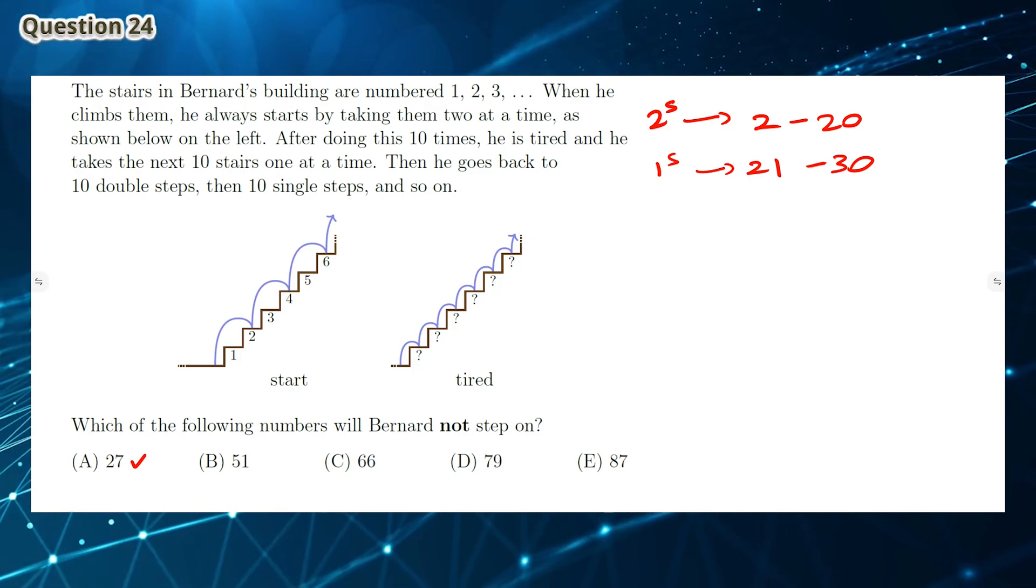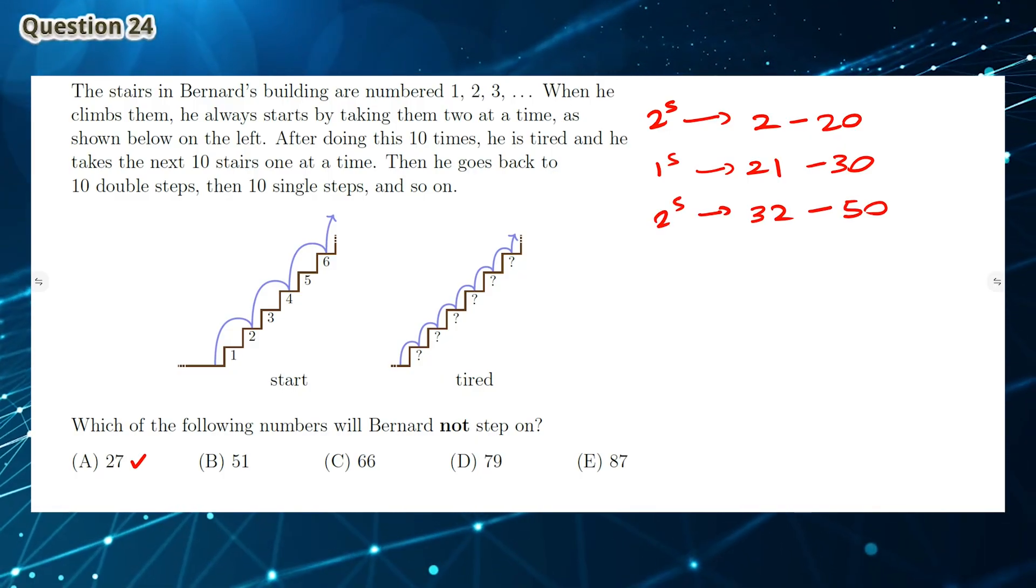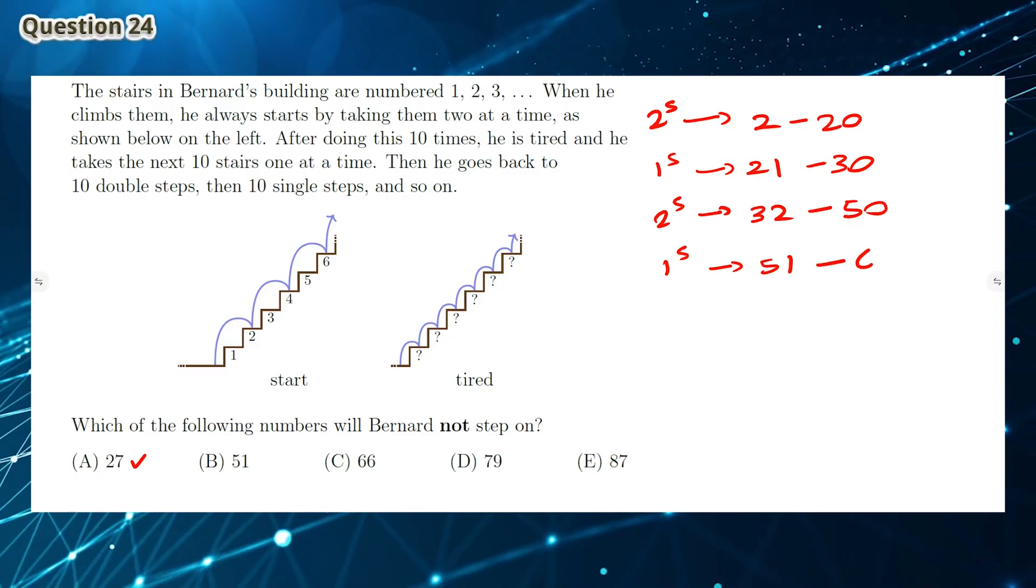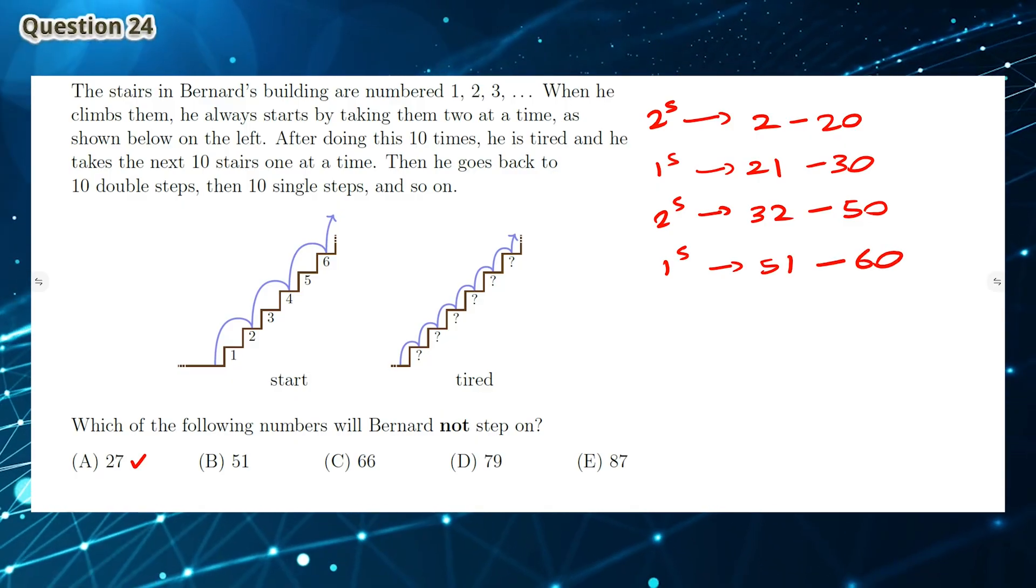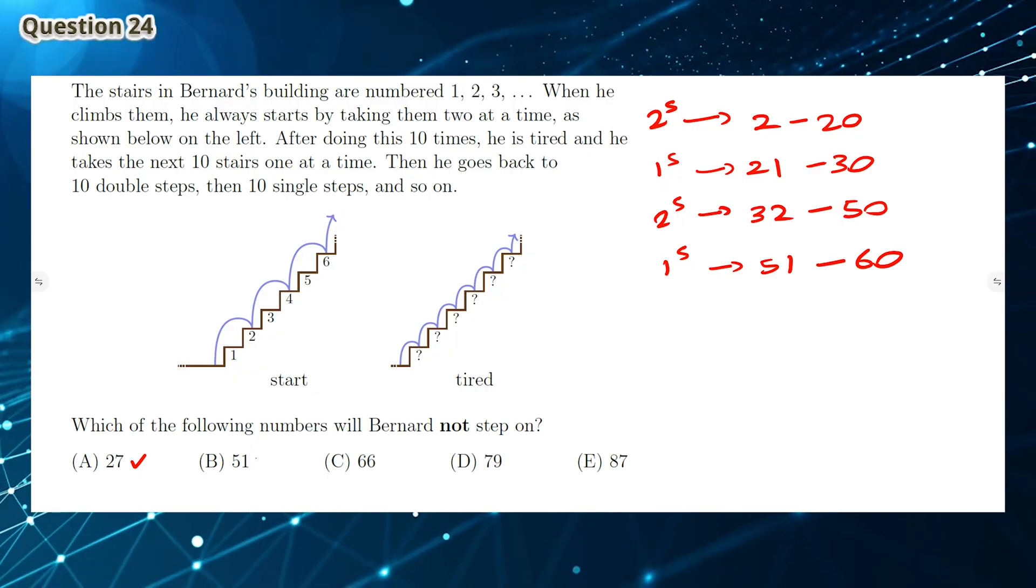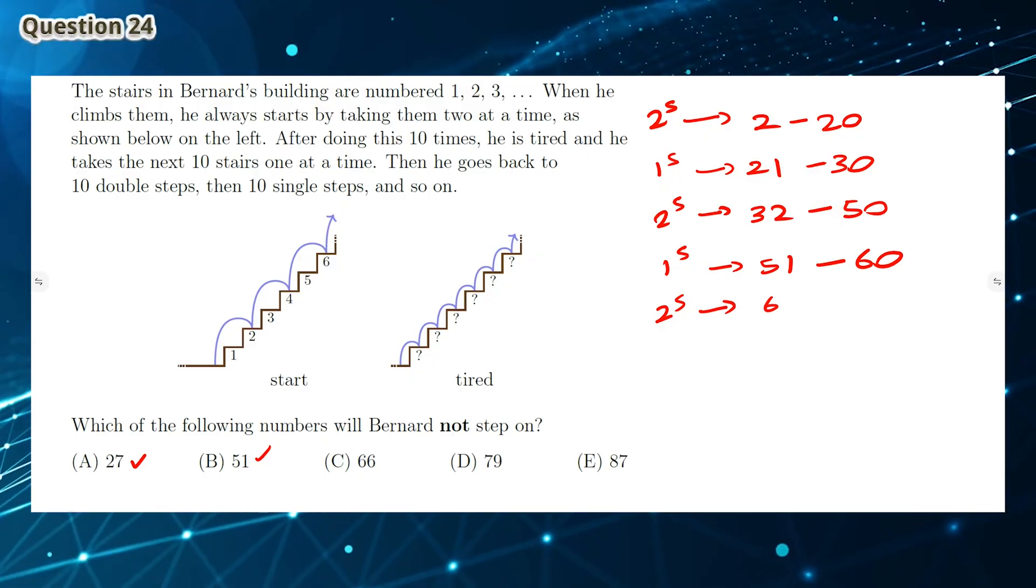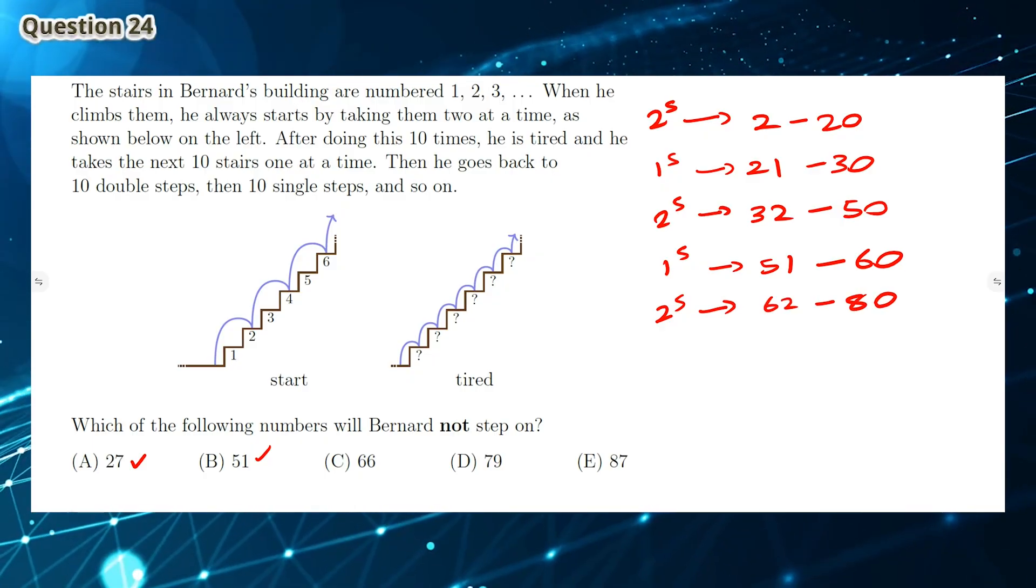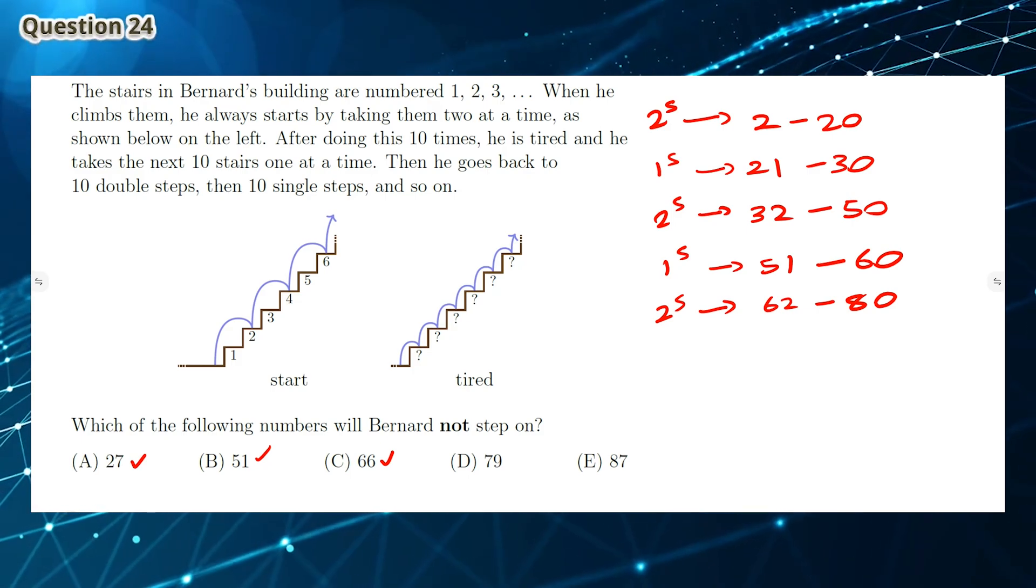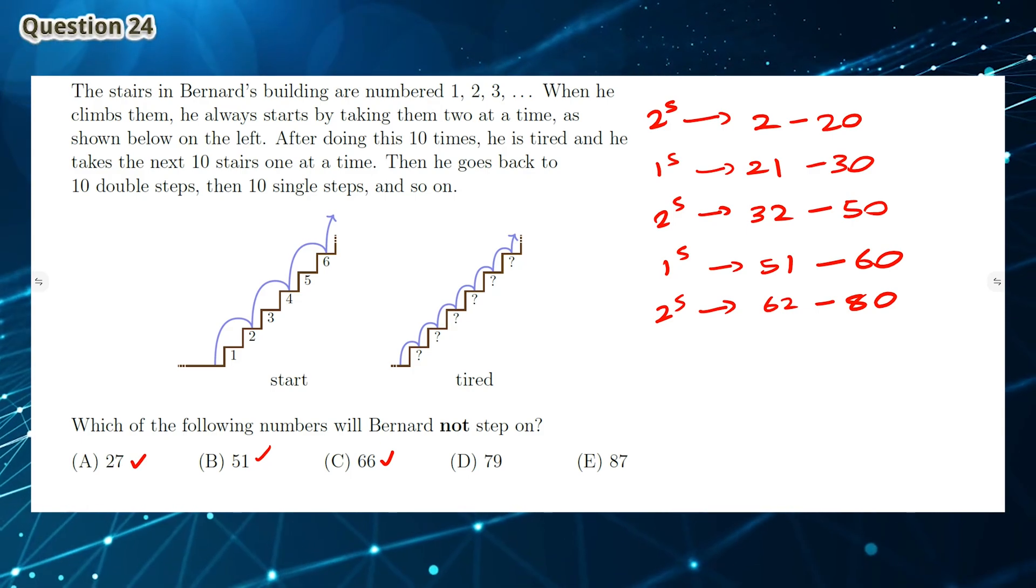And then he takes 10 two-steps from 32 to 50, and then another 10 one-steps from 51 to 60. This means Bernard also steps on step number 51, so B is not an answer. And then 10 two-steps from 62 to 80. So Bernard steps on step number 66. However, he does not step on step number 79. This means the answer is D.